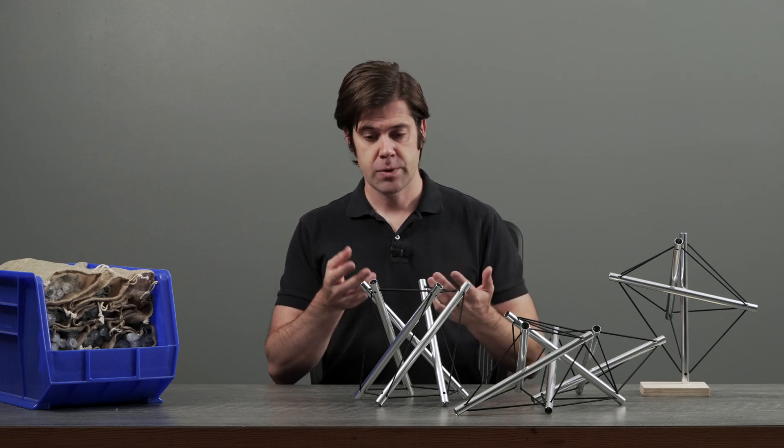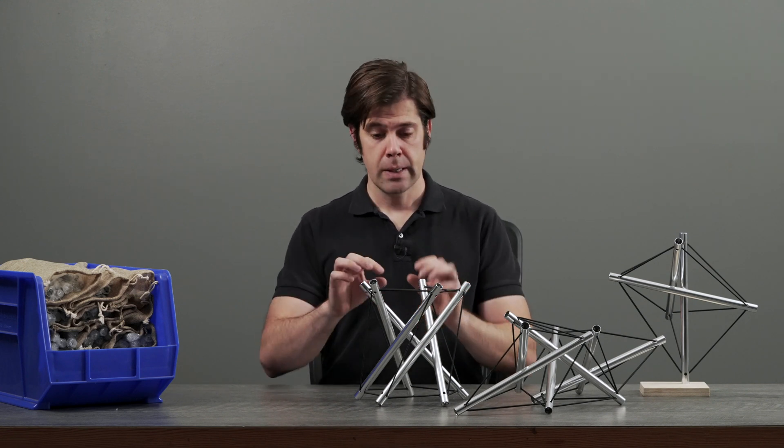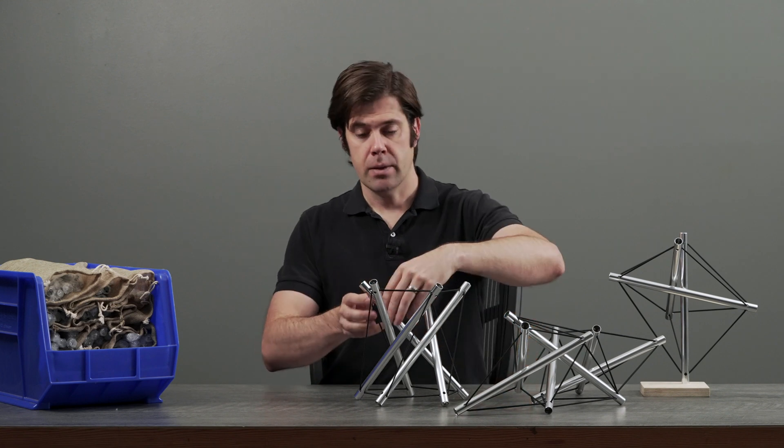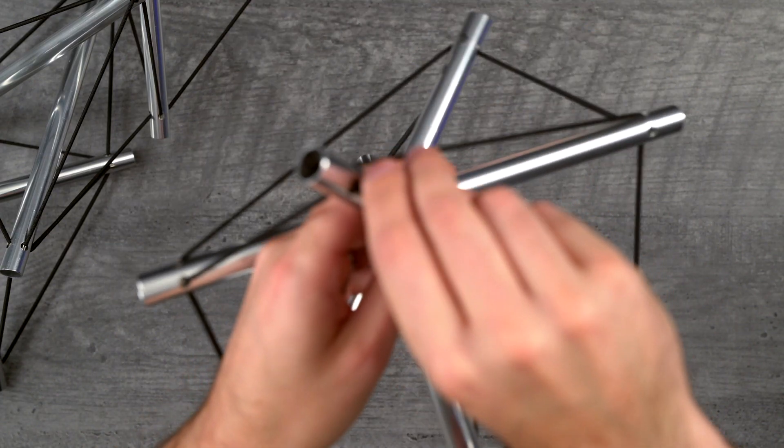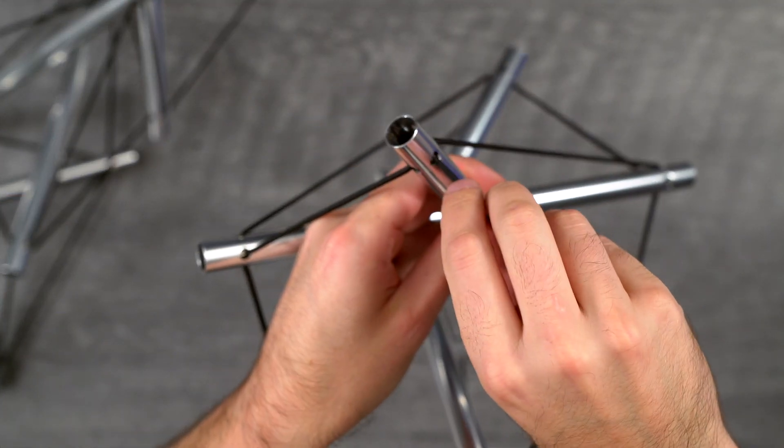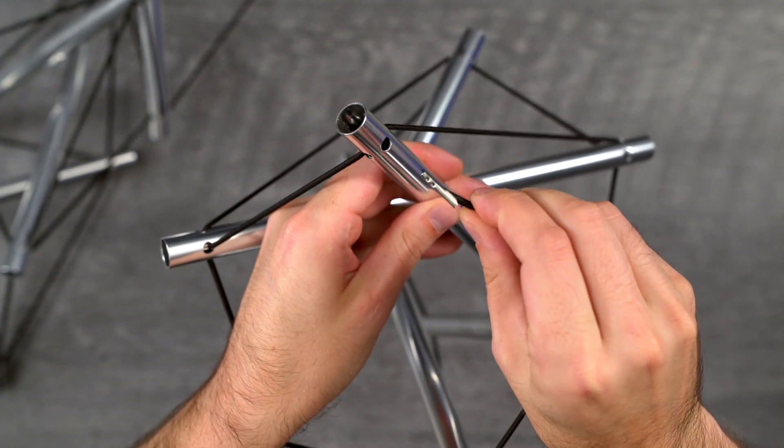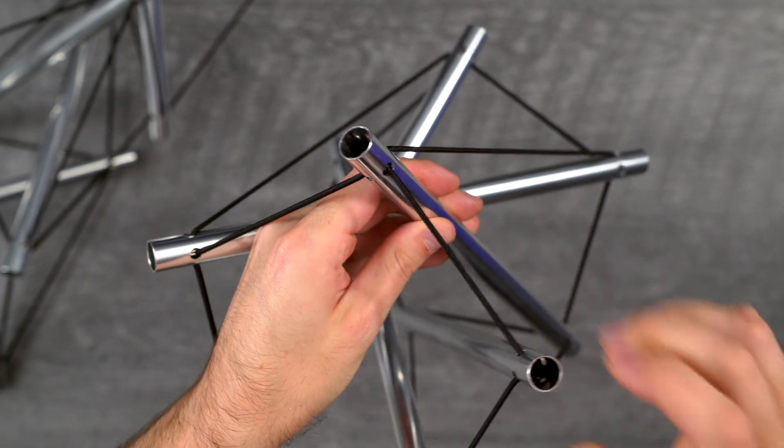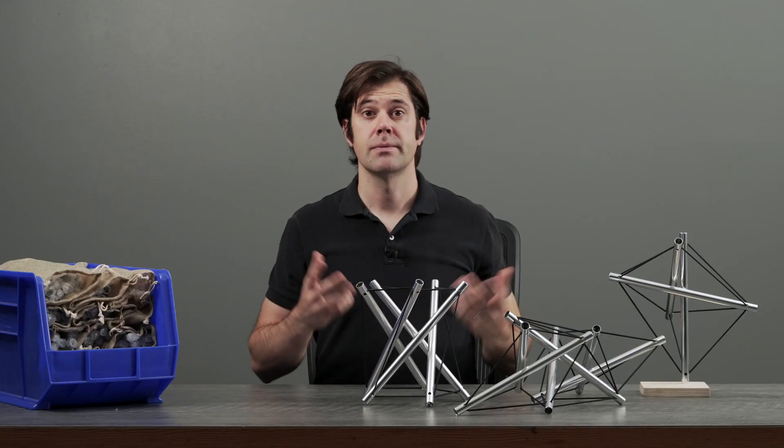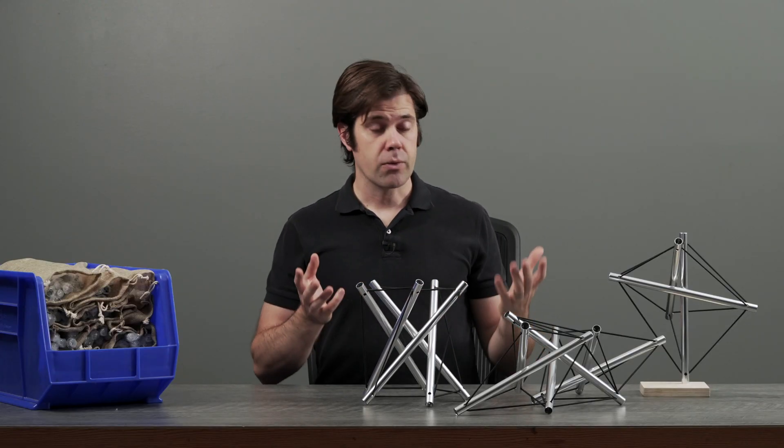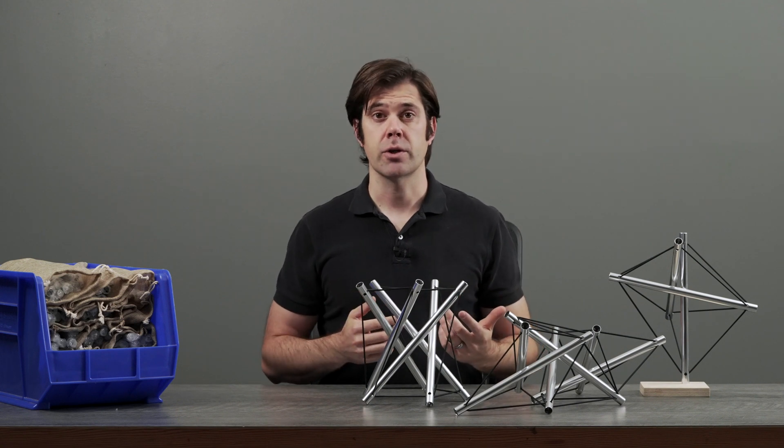It's standard parts. It's aluminum tubes and shock cord. And the interesting part about it is the way that they go together. There's a little barb on each end of the shock cord, and you can just pop it in to the end of a tube. And you can create a variety of tensegrity structures.